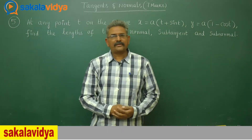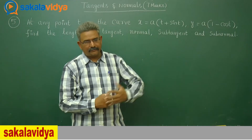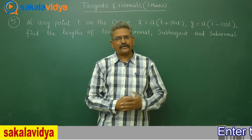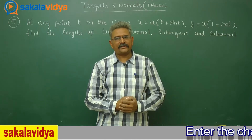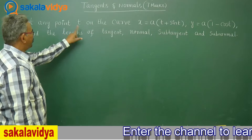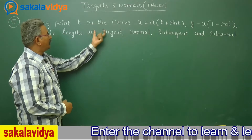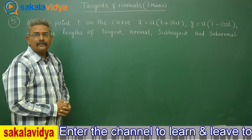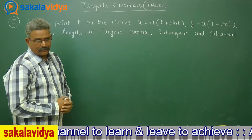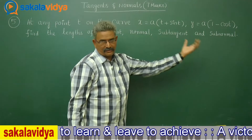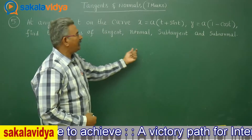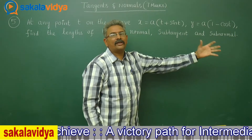Let us solve one more problem, but it will be different from the previous problems. At any point t on the curve, x is equal to a times (t plus sin t), y is equal to a times (1 minus cos t). Find the lengths of the tangent, normal, subtangent, and subnormal.